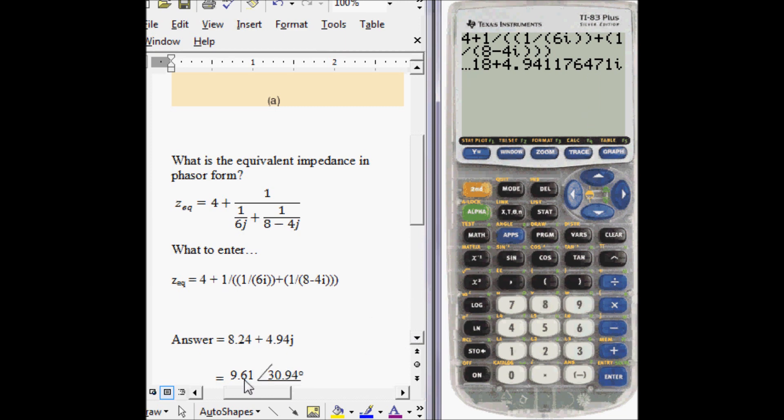In order to get this phasor representation we need to convert to polar coordinates. You can do this by pressing second, angle, to get R, which is this option, put 8.24, and then comma, 4.94, enter. You get 9.61 for R.